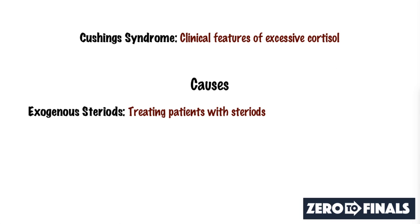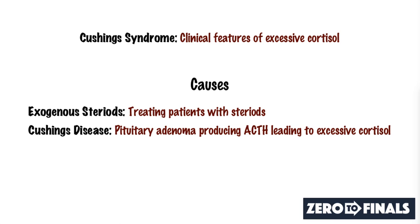The next cause — not to be confused with Cushing's syndrome — is Cushing's disease. This is where you have a pituitary adenoma, a small tumour within the pituitary gland that produces excessive amounts of ACTH, which then stimulates the adrenal gland to produce excessive amounts of cortisol.